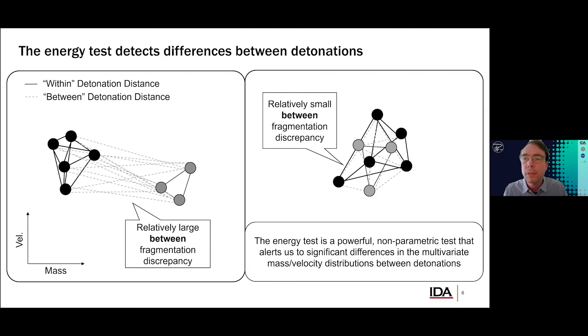On the left is an example of the energy test finding a difference between two detonations. The idea is that we measure the average between detonation distance, which is the dotted gray lines, and we compare it to the average within detonation distances. And those are the solid black lines. And then when the between distances overmatch the within distances, the detonations are determined to be statistically different, according to probably a bootstrapping procedure. On the right is a null difference. The average between and within detonation distances are roughly the same, which is to say that the solid black and dotted gray lines are, on average, roughly the same, or they're the same order of magnitude.